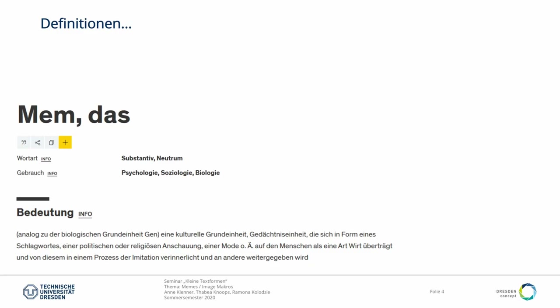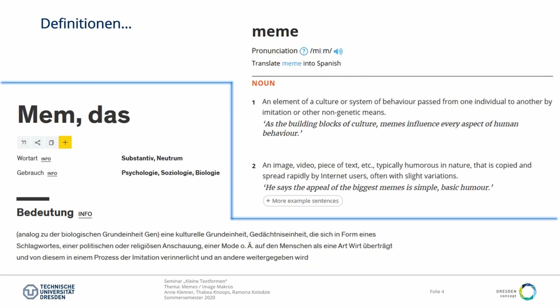Als Bedeutung steht da eine kulturelle Grundeinheit, Gedächtniseinheit, die sich in Form eines Schlagwortes, einer politischen oder religiösen Anschauung, einer Mode oder ähnlichem auf den Menschen als eine Art Wirt überträgt und von diesem in einem Prozess der Imitation verinnerlicht und an andere weitergegeben wird. Das hört sich zuerst komplex an und hat auf den ersten Blick wenig mit dem Meme zu tun, was wir kennen. Schaut man im englischen Wörterbuch, findet sich als erstes eine sehr ähnliche Definition, aber auch noch eine zweite Bedeutung: an image, video, piece of text, typically humorous in nature, that is copied and spread rapidly by internet users, often with slight variations. Das hört sich schon eher an nach dem, was wir unter Meme verstehen.